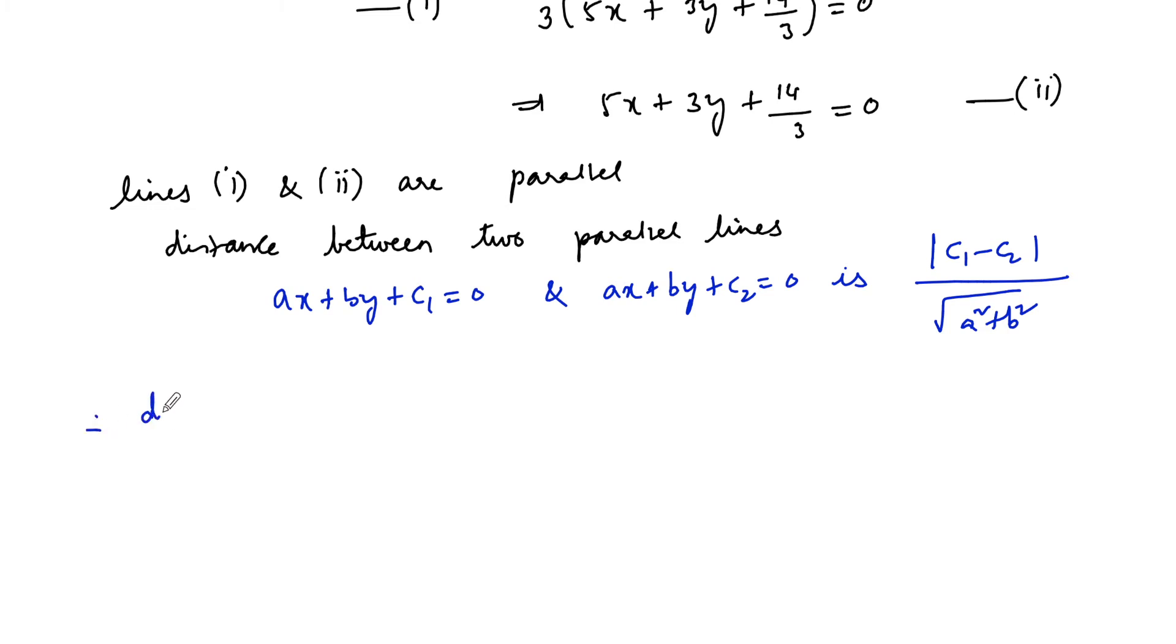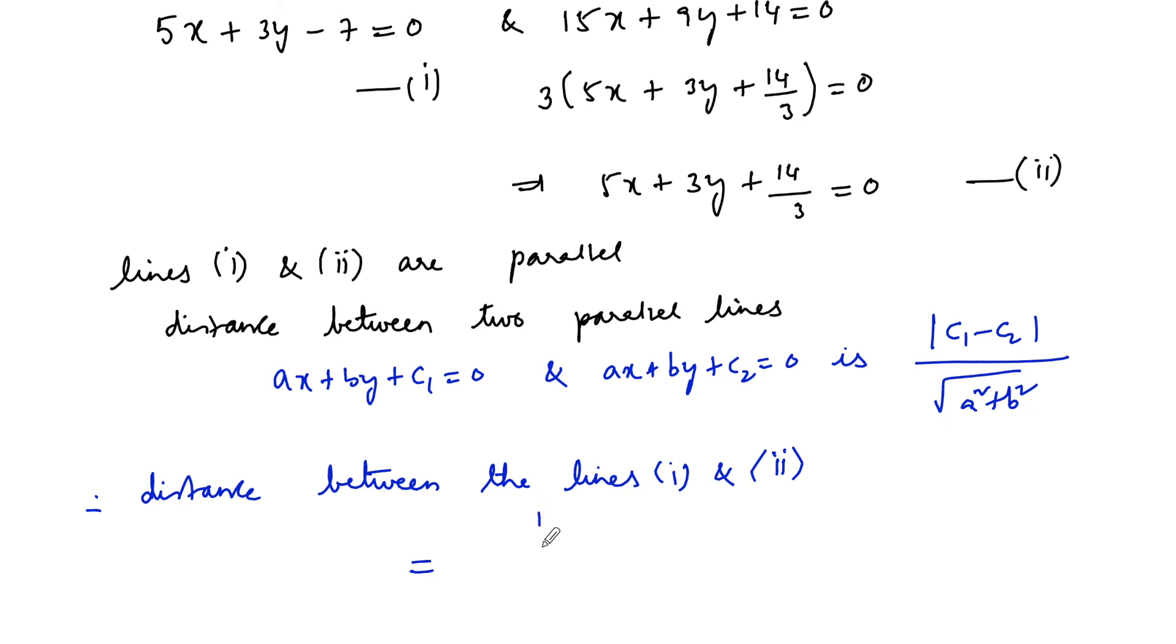Therefore, distance between the lines 1 and 2 can be taken as mod of C1 minus C2 when comparing with the lines. C1 is negative 7 minus C2 which is 14 upon 3, upon root over A square plus B square.